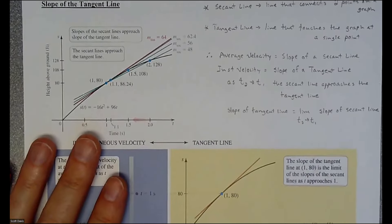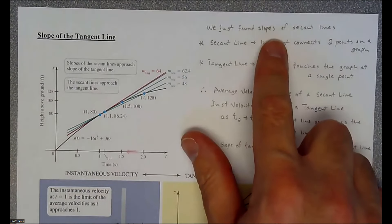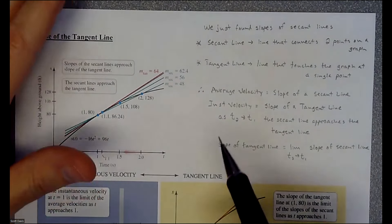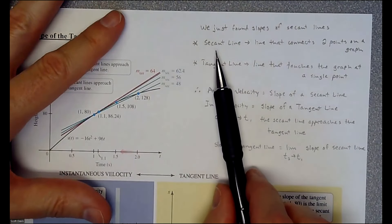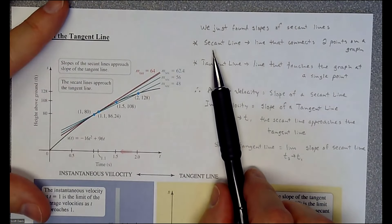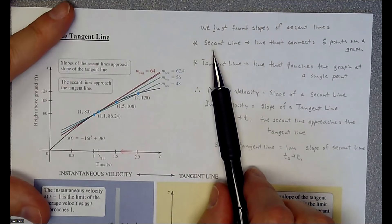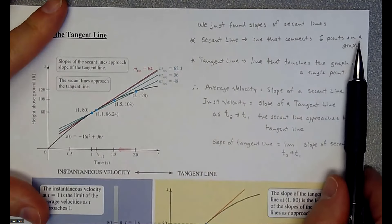So the idea is that we just found slopes of secant lines. So just to kind of refresh your memory on what a secant line is, a secant line is just like a geometry idea. It's defined as a geometry, that it's a line that connects two points on a graph.